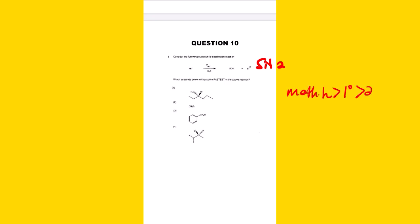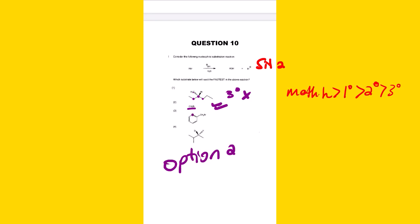Question ten: considering a nucleophilic substitution reaction with a strong nucleophile, this is again SN2. The question asks which substrate reacts fastest. Using the substrate trend — methyl, primary, secondary, tertiary — we look at the options. One option has the carbon bonded to three other carbons, making it tertiary. Another is a methyl halide, making it option two. Confirming the others are secondary, option two is the correct answer.